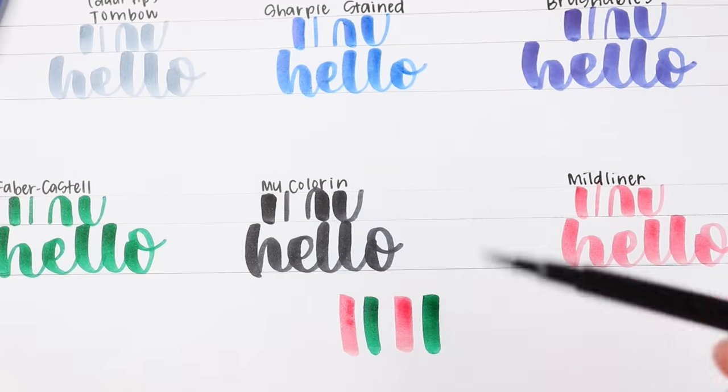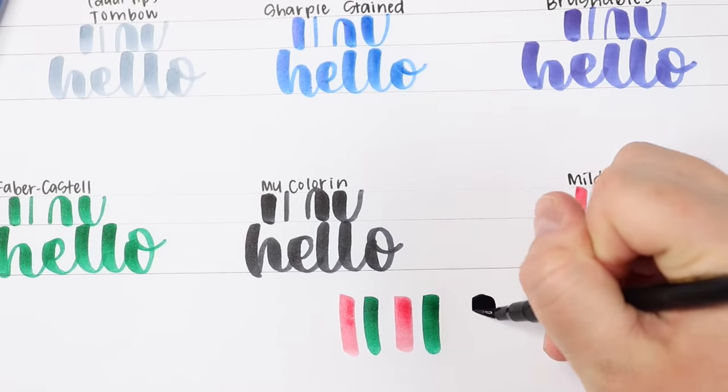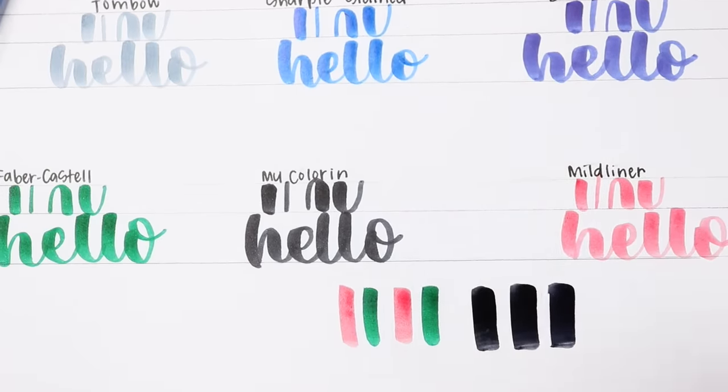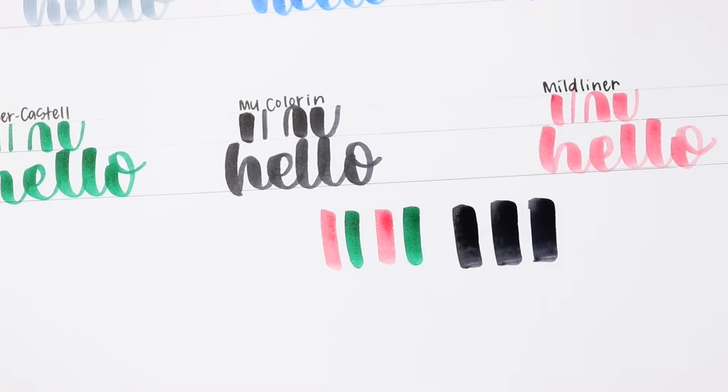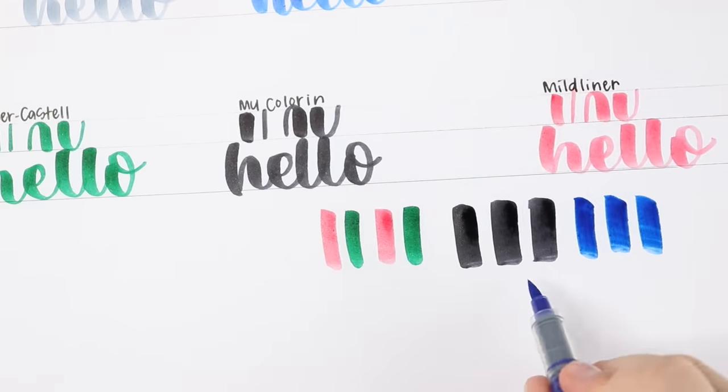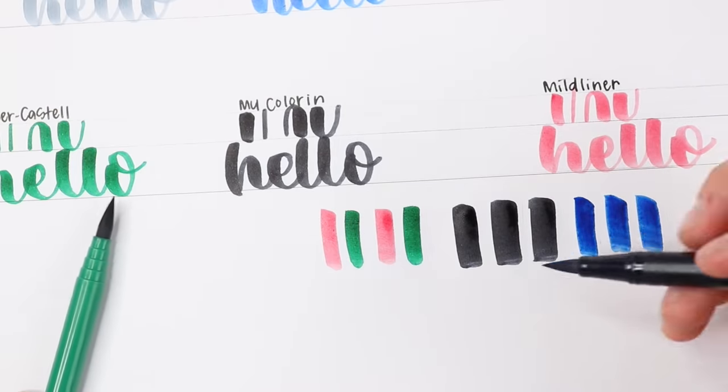With the color in and the sharpie stained here I'm pushing really hard to compare. The color in just feels really flexible and kind of flops over which I do love in certain types of lettering. The sharpie stain doesn't get quite as thick when I push really hard and when I push really hard with the Tombow it still does feel pretty firm. And the Zig brushable does feel softer when I push it really hard but I'm thinking this also might be a bit older of a pen.